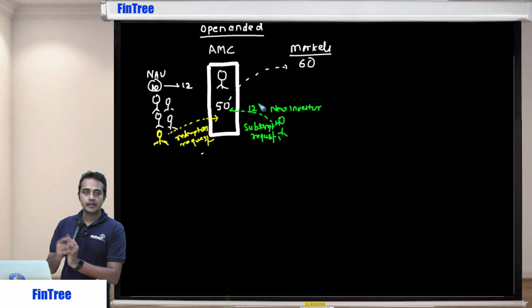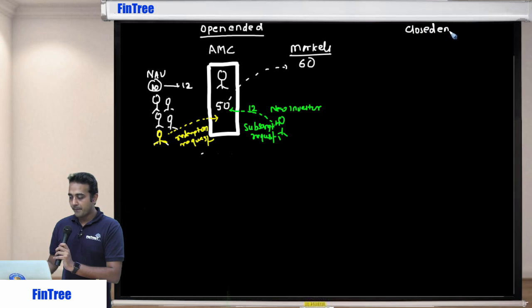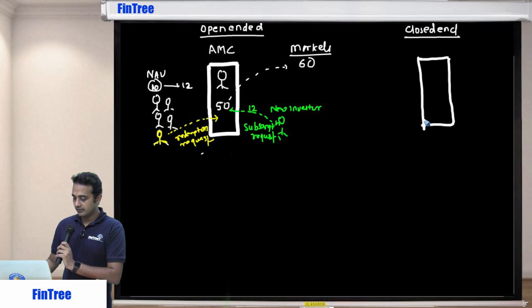Now this is the alternate structure. Look at this carefully. This is now closed-end. Now tell me, what is this? AMC. And who is this? Fund manager again.